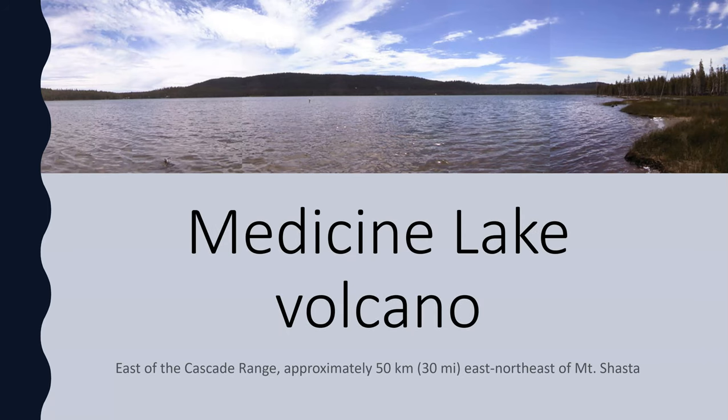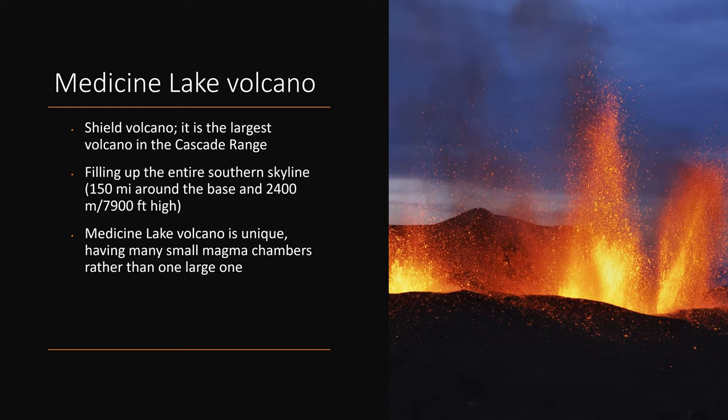Medicine Lake volcano is east of the Cascade range, approximately 50 kilometers east-northeast of Mount Shasta in the very northeastern portion of California. It is a shield volcano and is the largest volcano in the Cascade range. It fills the entire southern skyline — about 150 miles around the base — and is about 7,900 feet or 2,400 meters high. The Medicine Lake volcano is unique in that it has many small magma chambers rather than one large one, like we see in Yellowstone.